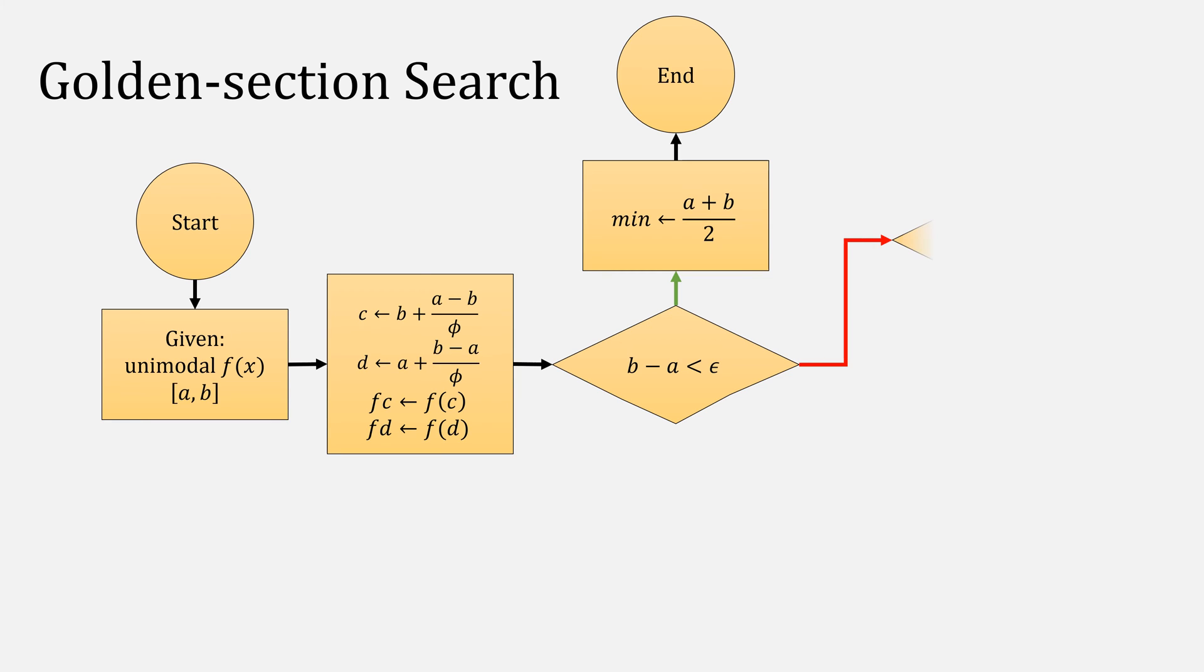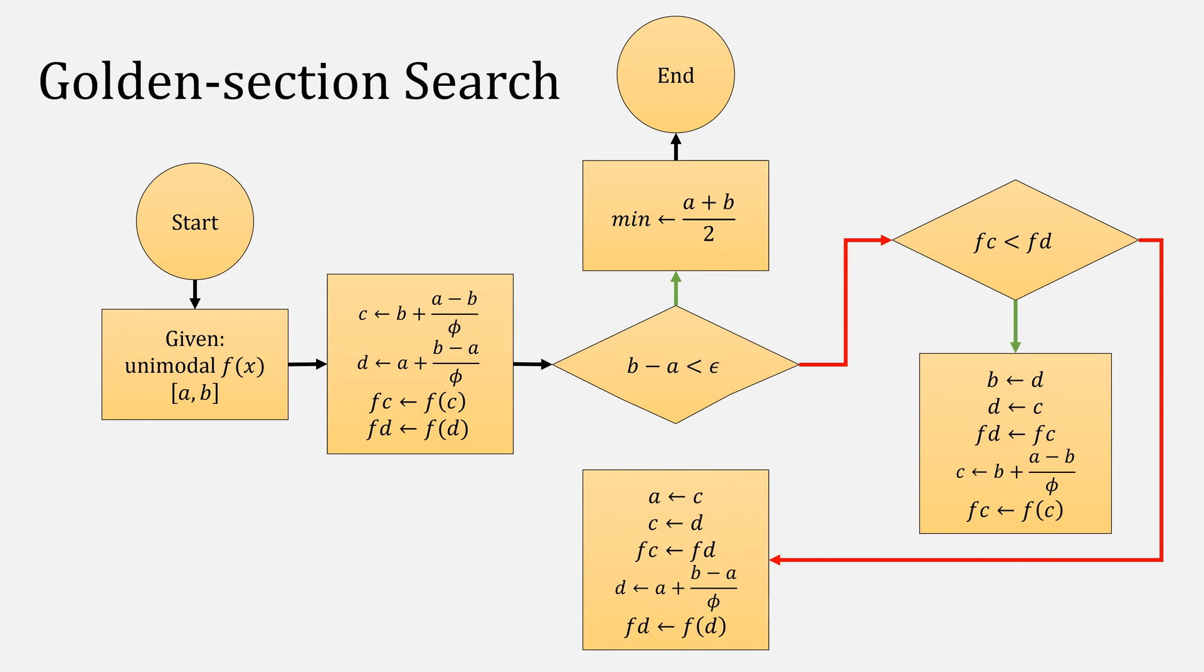When it isn't, check if F of C is less than F of D. When that's the case, remove the rightmost side, and save off our values for C and F of C. Then compute a new C and new F of C. Otherwise, we do the opposite side. Then repeat the process.